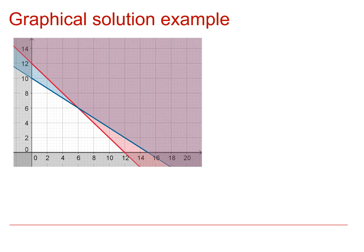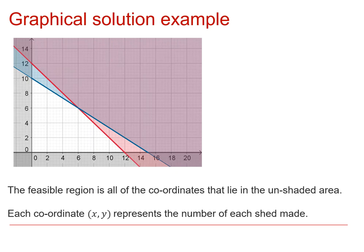And then what we did is we plotted all of those constraints onto a graph, leaving the feasible region, which was the region that satisfied all of the constraints. And what we know is that whatever the point given by values x and y is that maximizes the objective function, it must lie somewhere on the feasible region.